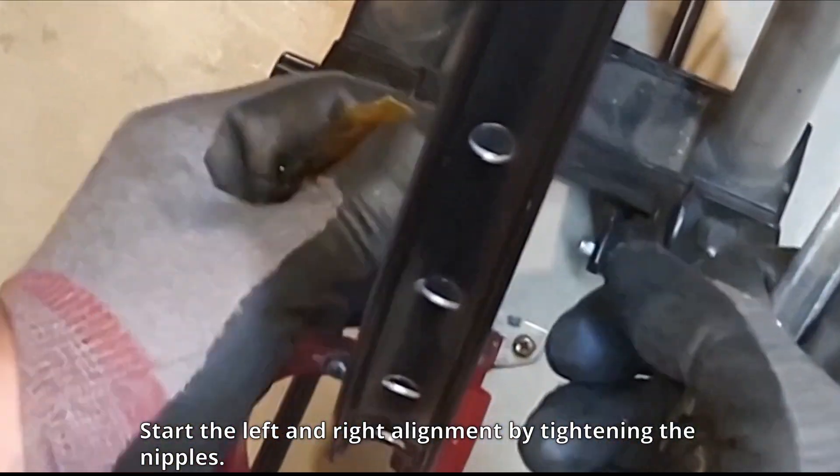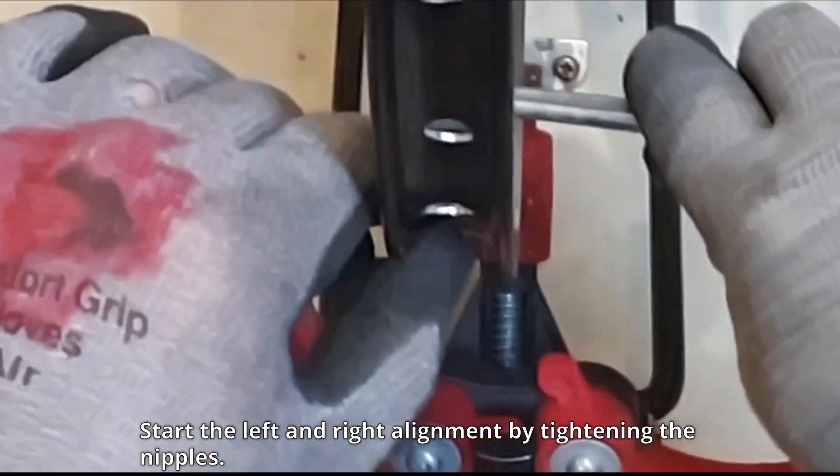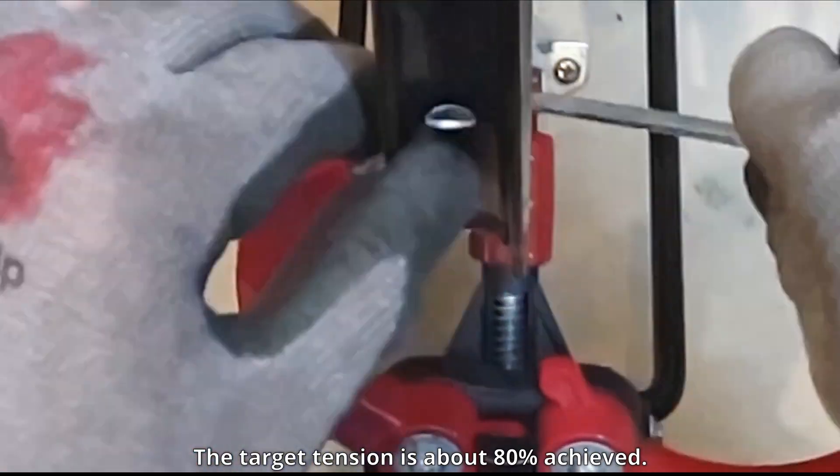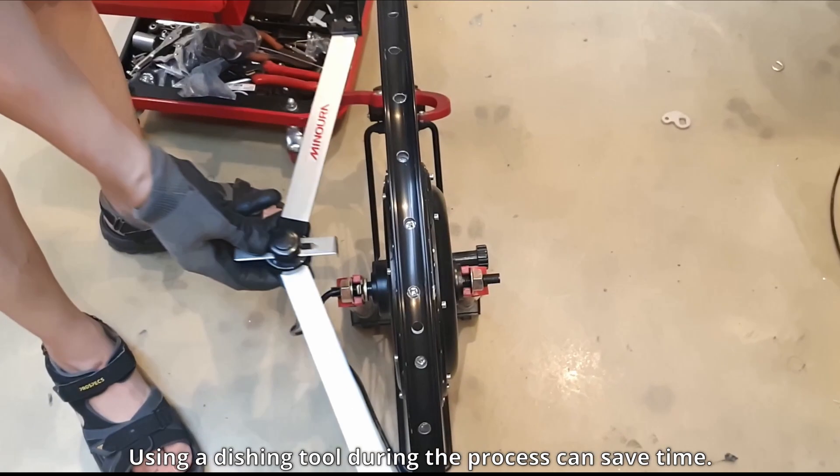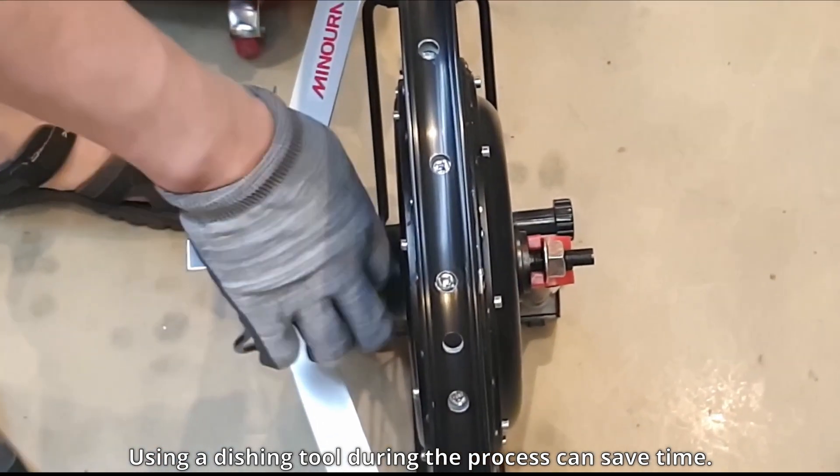Start the left and right alignment by tightening the nipples. The target tension is about 80%, achieved using a dishing tool during the process can save time.